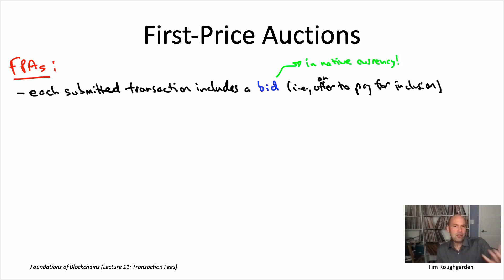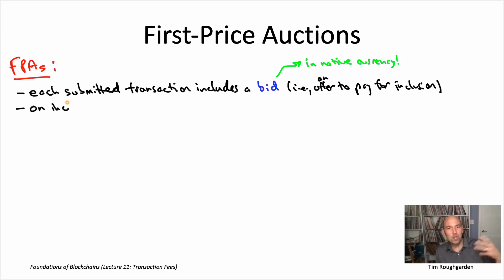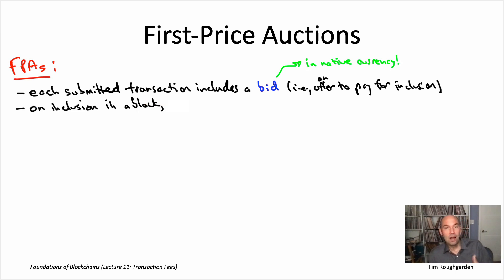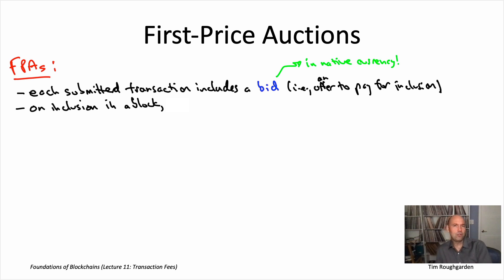If your transaction never gets executed, never gets included into a block, you don't have to pay your bid. But if it is chosen to belong to some block in the blockchain, then you are going to have to pay your bid. So the question you may ask is: pay it to whom, exactly? To whom is that payment directed?